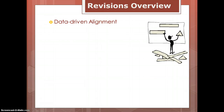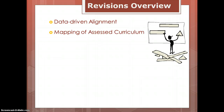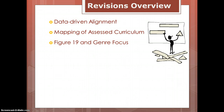Let's talk about what revisions took place. The first thing we did is looked at data to make sure we were covering the skills that data told us needed to be emphasized more based on the needs of our students. We also looked at the mapping of the assessed curriculum, which means we need to cover the assessed curriculum before assessments for grades 6 through 8 in both reading and writing. Another new component had to do with Figure 19 and ensuring that we were marrying that process standard with genres and strands.